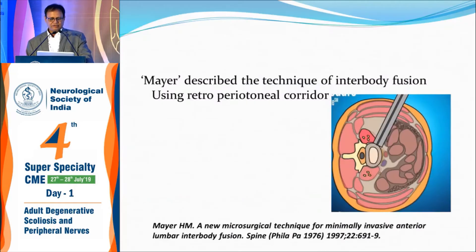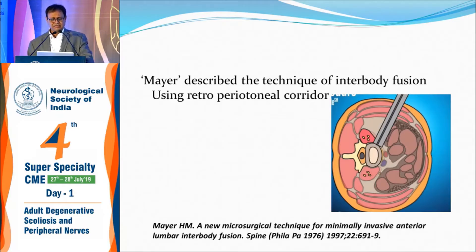To avoid these complications of lumbosacral plexus damage, one can go in front of the psoas and behind the aorta — this is called oblique lumbar fusion. This was done earlier with an open approach, which Mayer described in 1997, using a retroperitoneal corridor to do a corpectomy or discectomy, but it had not become popular.